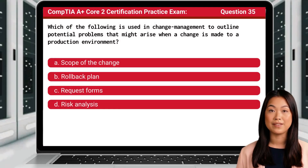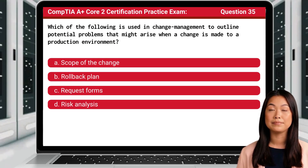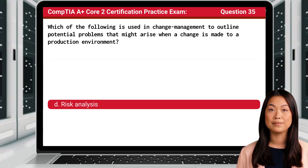Question 35. Which of the following is used in change management to outline potential problems that might arise when a change is made to a production environment? The answer is D: Risk analysis.